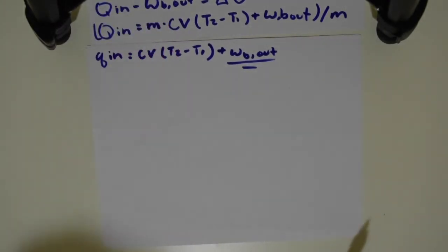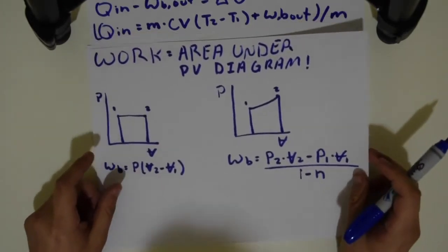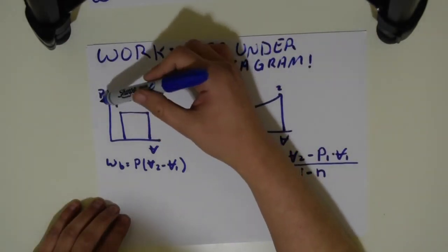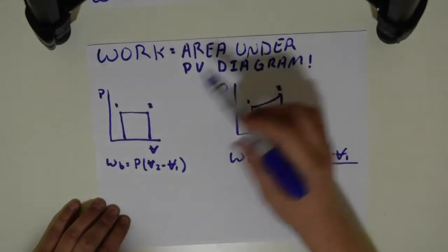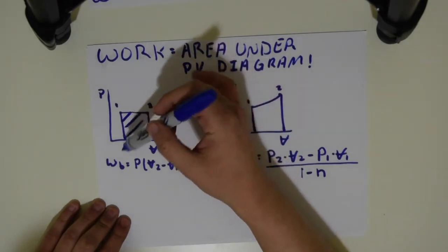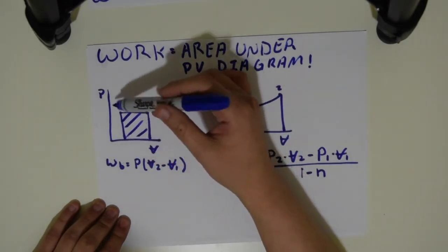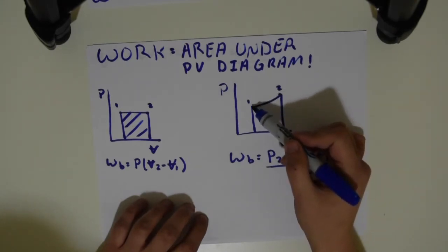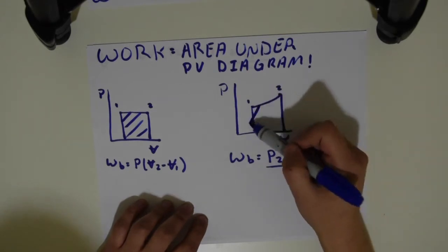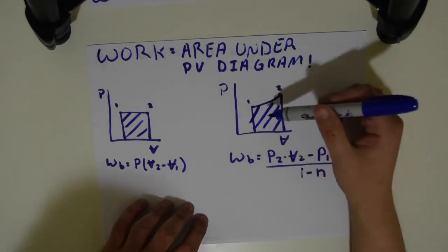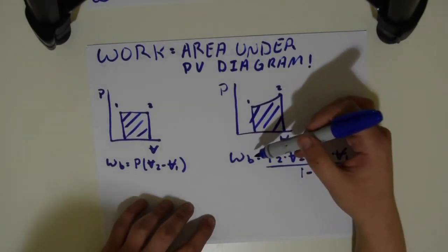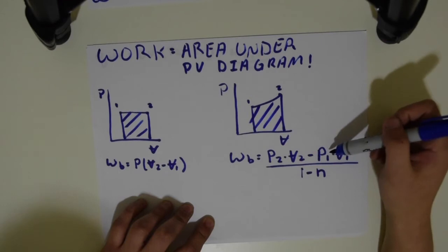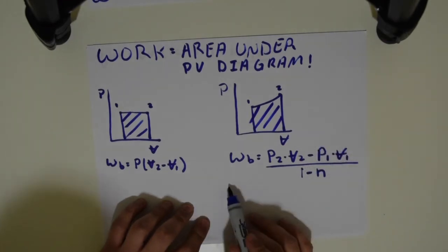To find the work produced, we need to understand what work means. Work is the area under a PV diagram. For a constant-pressure process the area gives work of the boundary as P times (V2 minus V1). A polytropic process looks like a swooping curve, and we need the area under that. From the textbook, the work of the boundary for a polytropic process is: W = (P2·V2 minus P1·V1) divided by (1 minus N).